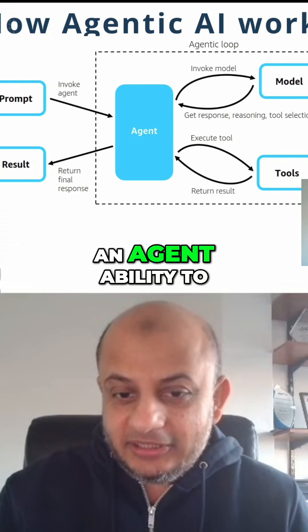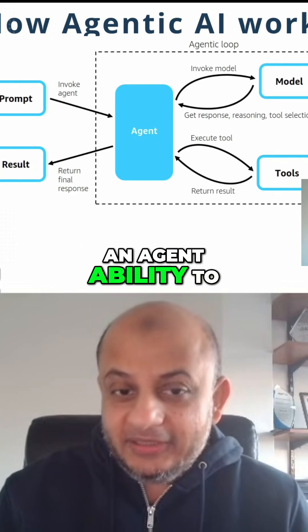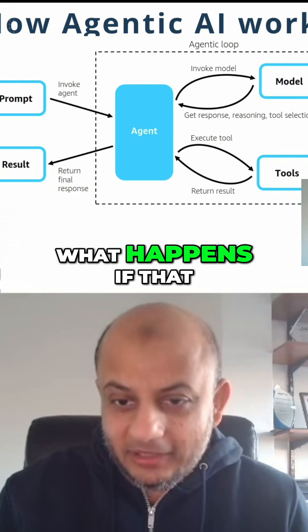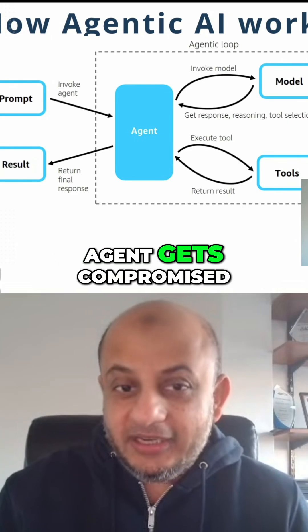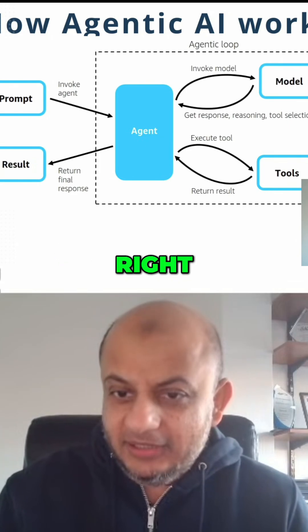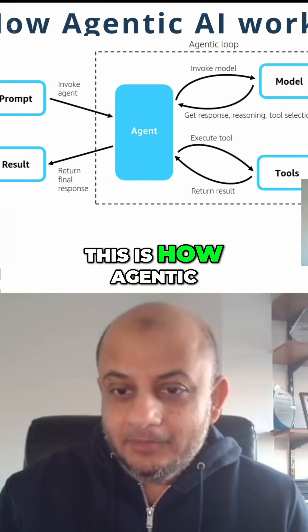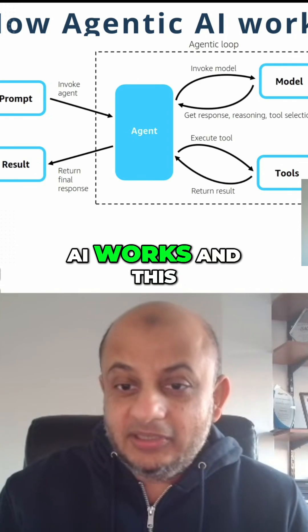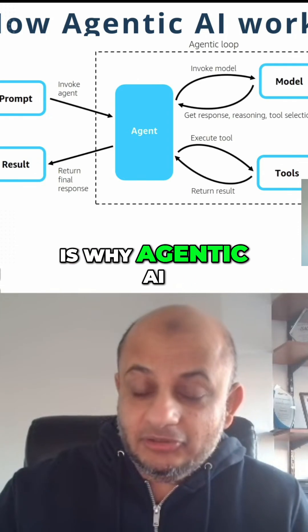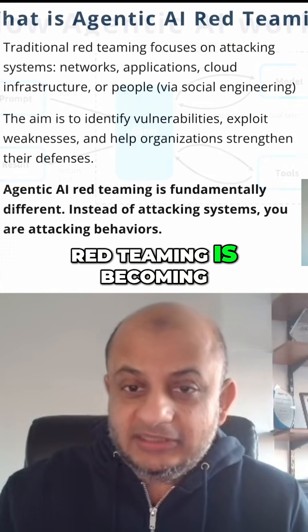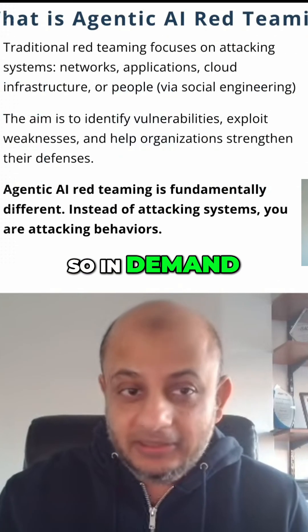If you've given an agent the ability to do something, what happens if that agent gets compromised? This is how agentic AI works, and this is why agentic AI red teaming is becoming so in demand.